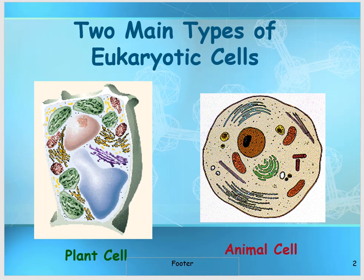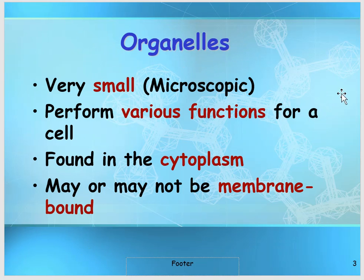They are called eukaryotic because of the presence of a clear nucleus. The rest of the structures scattered in the cytoplasm, including the nucleus, are called organelles. These organelles are very small — they are microscopic — and we have to use a microscope to see them. They perform different functions depending on the cell type, whether it's a brain cell, blood cell carrying oxygen, or a muscle cell. Some organelles are covered with a membrane, like a plasma membrane, and some are not.